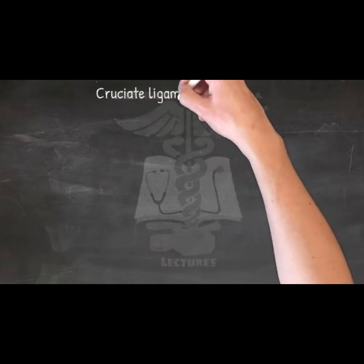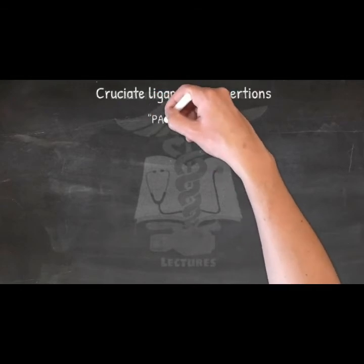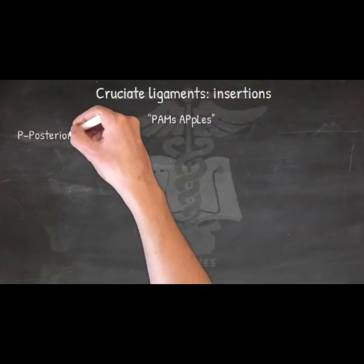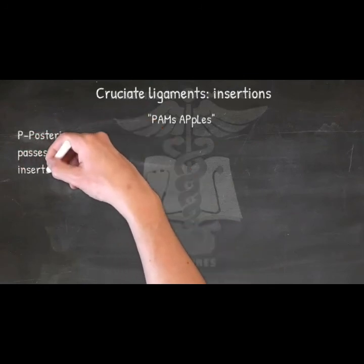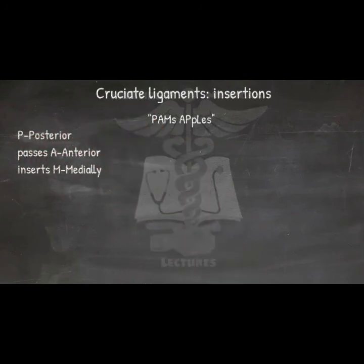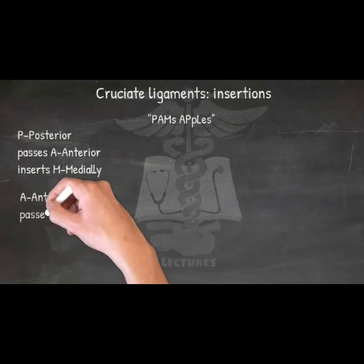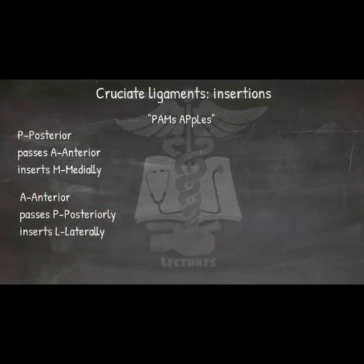Insertions of cruciate ligaments — mnemonic: 'Pam's Apples.' Posterior cruciate ligament Passes Anterior and Inserts Medially. Anterior cruciate ligament Passes Posteriorly And Inserts Laterally.